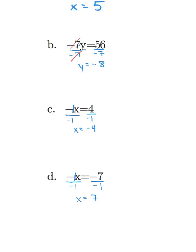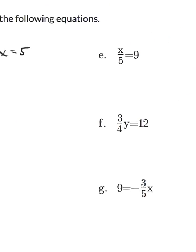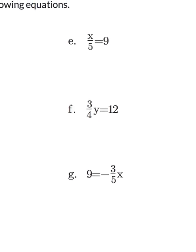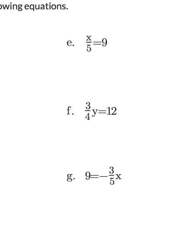Those were basic examples involving integers. Now let's look at some involving fractions. In example E, think of x over five as a division problem: x divided by five equals nine. The opposite of dividing is multiplying, so we multiply both sides by five. On the left side the fives cancel leaving just x, and on the right side nine times five is 45.